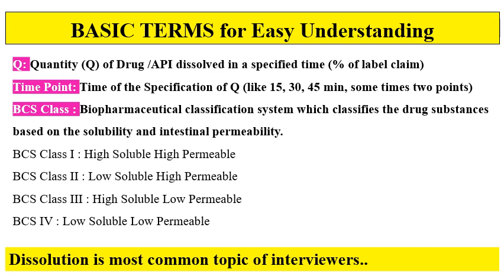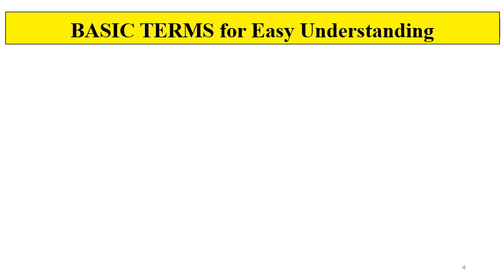BCS class — the Biopharmaceutical Classification System — classifies drug substances based on solubility and intestinal permeability. There are four BCS classes: Class 1 is high soluble and high permeable; Class 2 is low soluble and high permeable; Class 3 is high soluble and low permeable; Class 4 is low soluble and low permeable. This information is important when setting dissolution specifications and providing justifications.